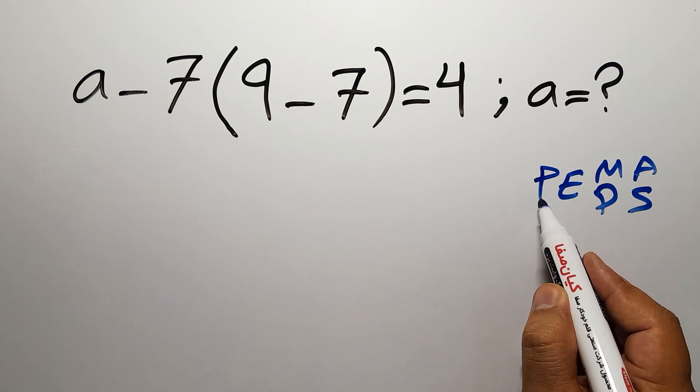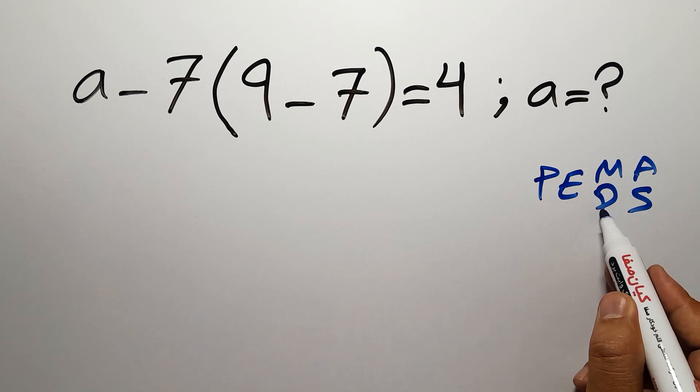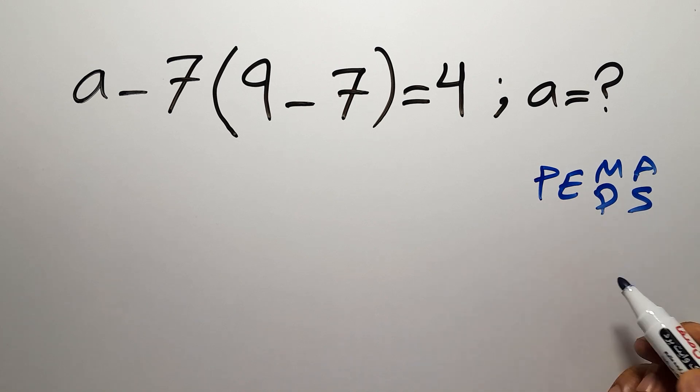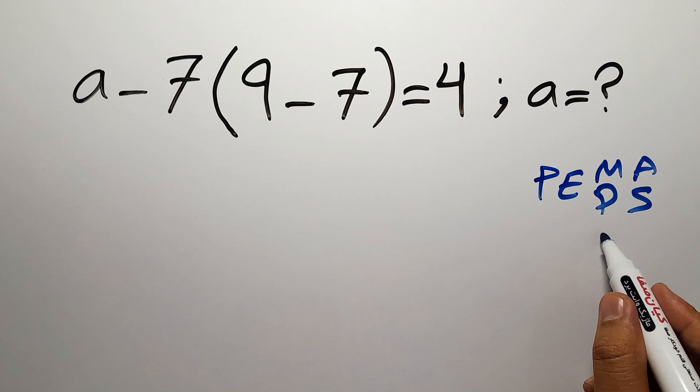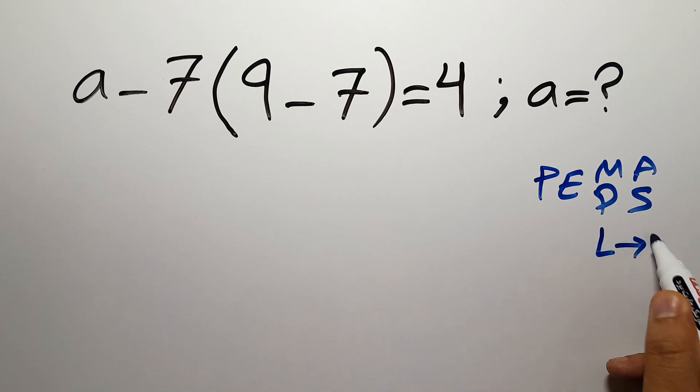First, we have to do parentheses, then exponents, then multiplication or division, and finally addition or subtraction. Remember that multiplication and division have equal priority, and we have to work from left to right. And the same applies to addition and subtraction.